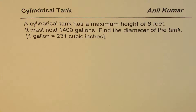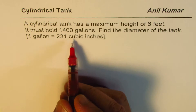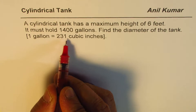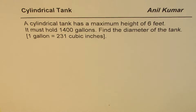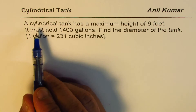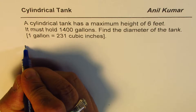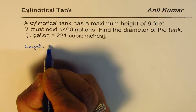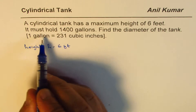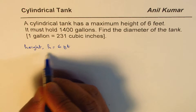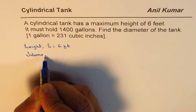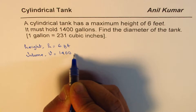I'm Anil Kumar, sharing with you a solution to a question from my subscriber. The question is: a cylindrical tank has a maximum height of 6 feet and must hold 1400 gallons. Find the diameter of the tank. We are also given the conversion factor that one gallon is 231 cubic inches. So first, let us write down the given information: height H equals 6 feet, and volume V equals 1400 gallons.